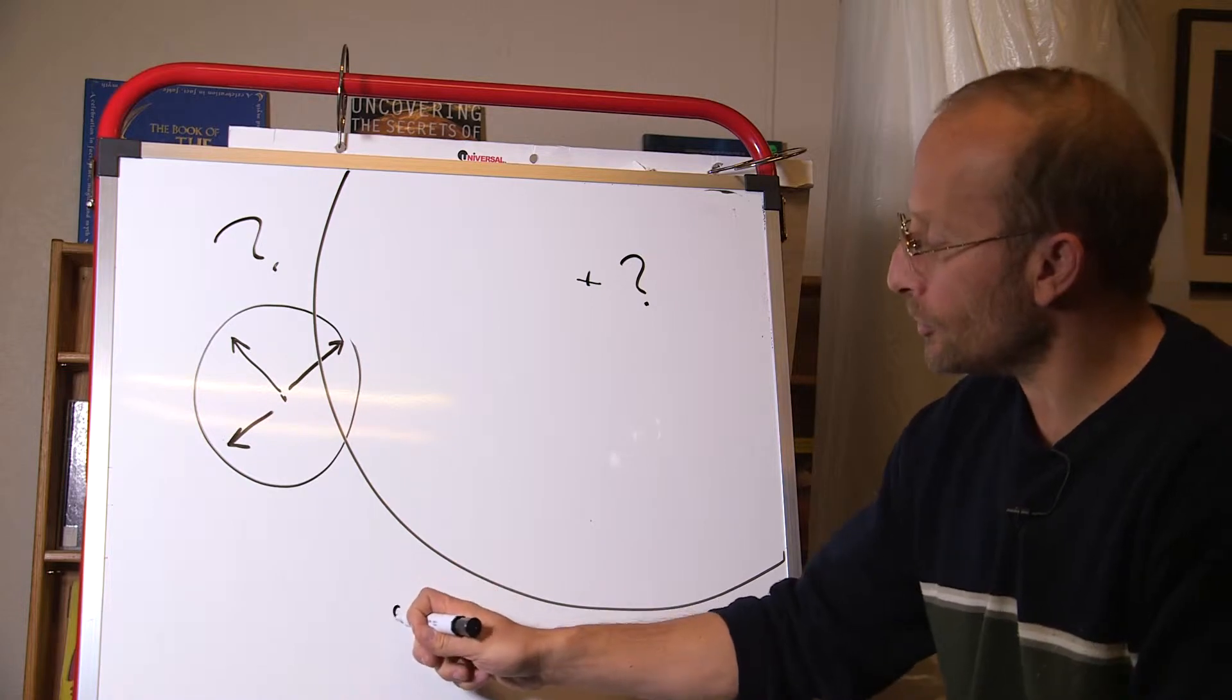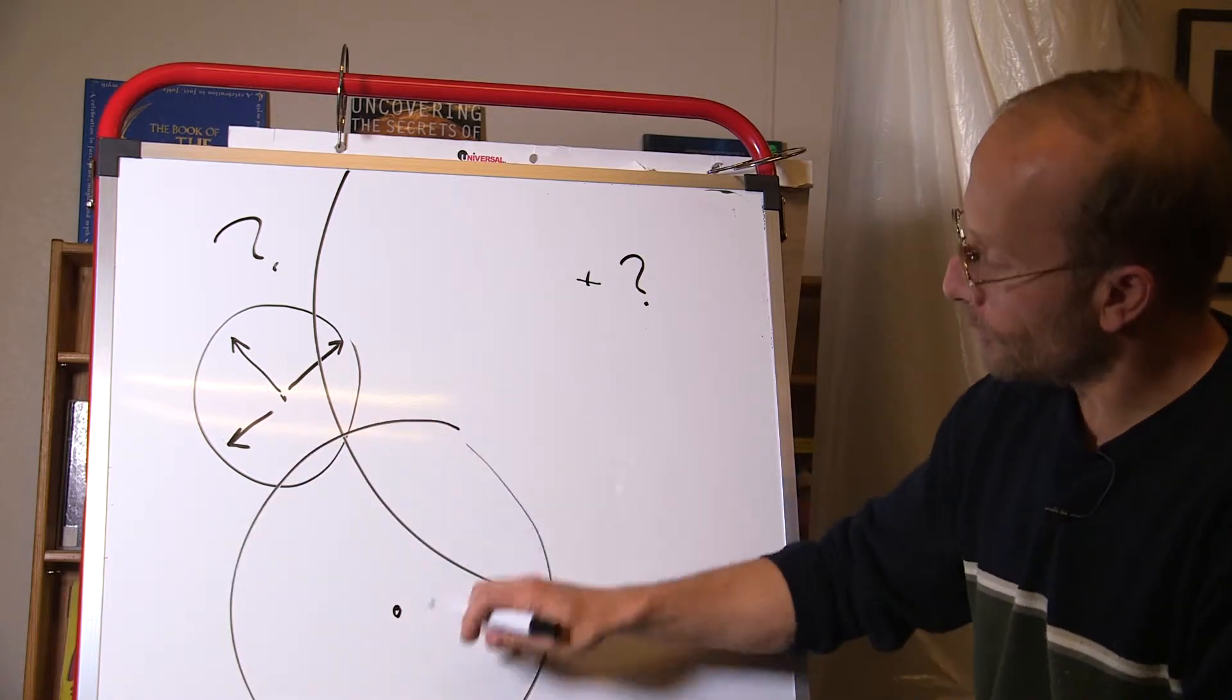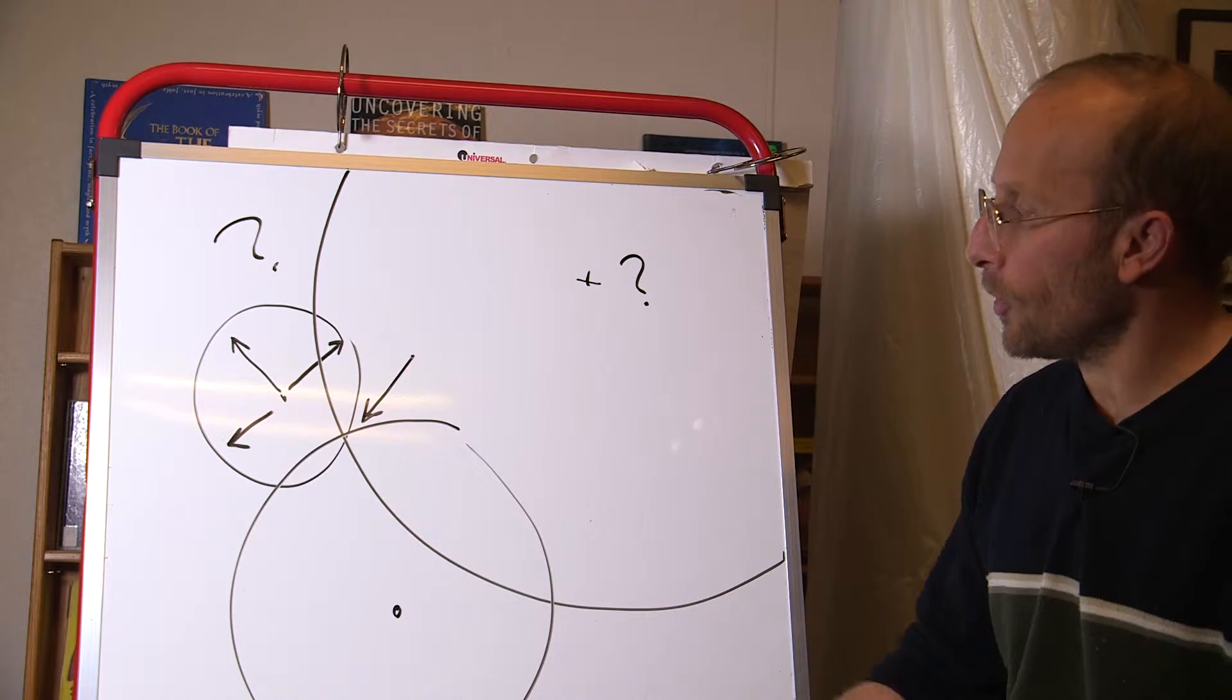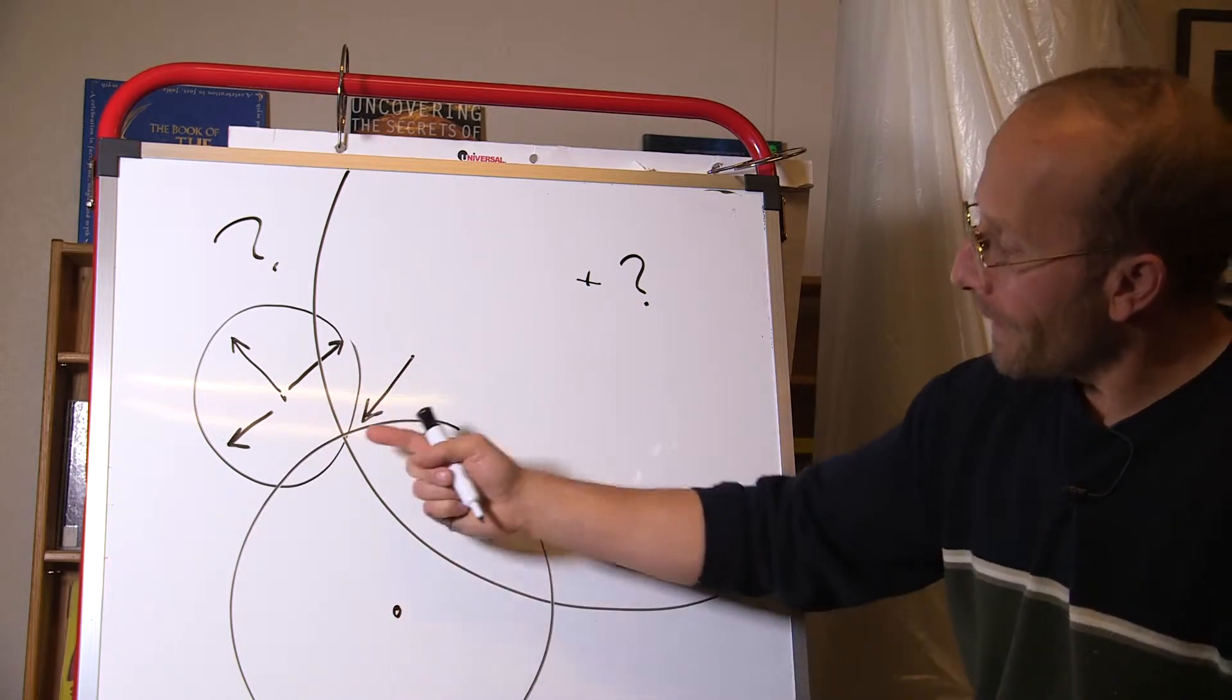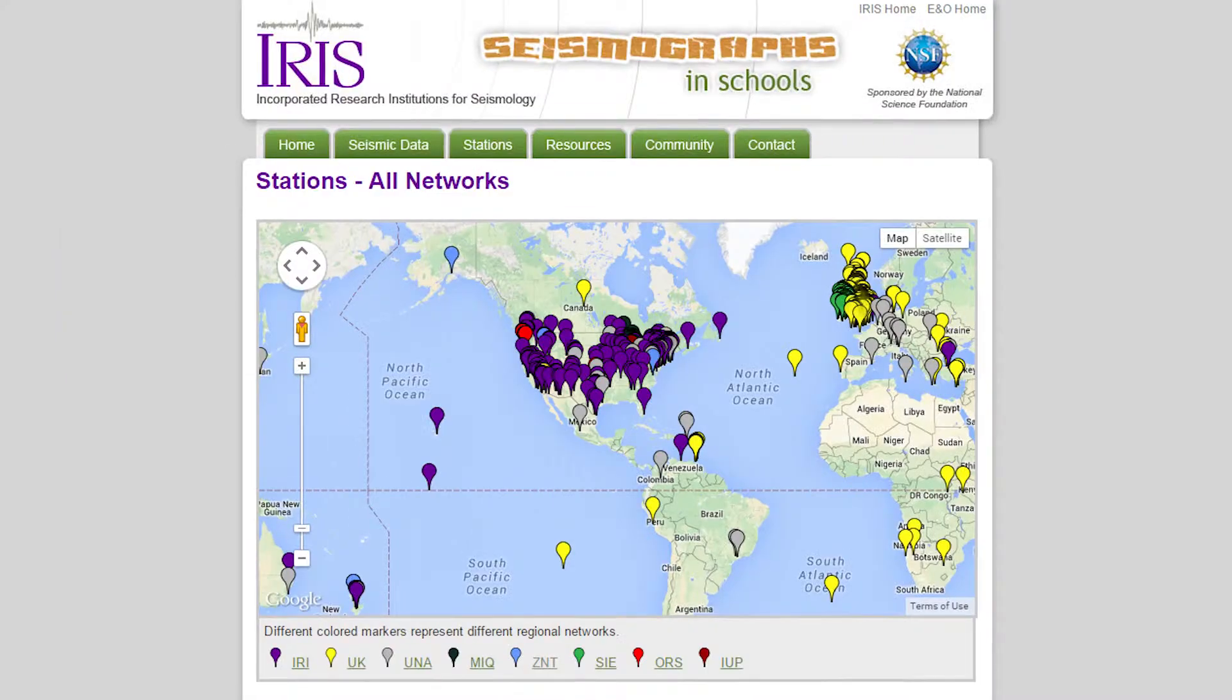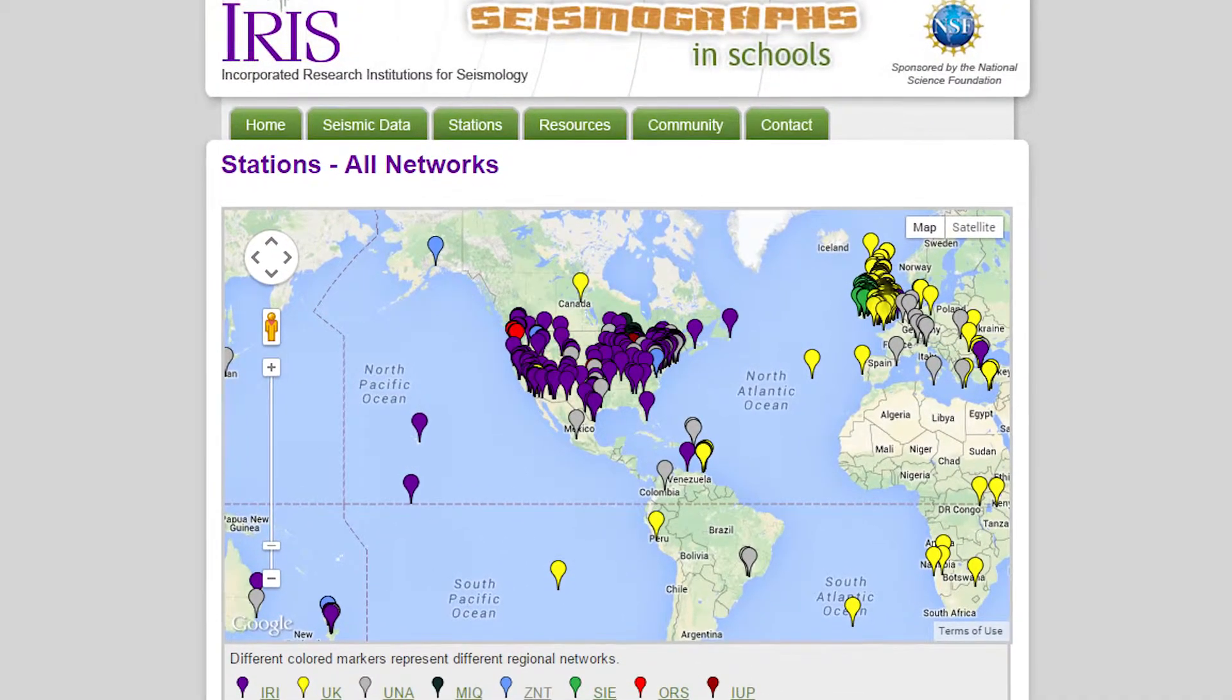We really need to have a third station and only then can we say, oh look, this is the correct radius and right there is the only spot on earth that's the right distance from all one, two, three stations. So that must be where the epicenter is. Now we know the location where the earthquake occurred. The more stations we have, the more precisely we can pinpoint that epicenter.